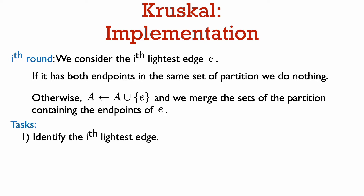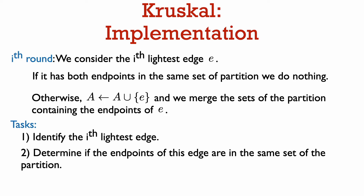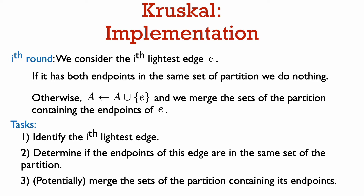Let's break down what we need to implement into simpler tasks. The first thing we have to do is find the ith lightest edge. The next thing is to determine if the endpoints of this edge are in the same set of the partition, because this will determine what action we take. Finally, we want to be able to merge two sets in the partition, which we will need to do if the endpoints are in different sets.